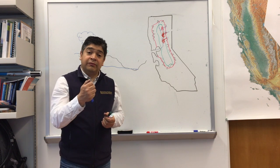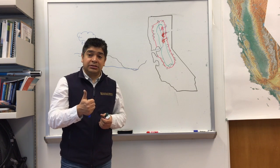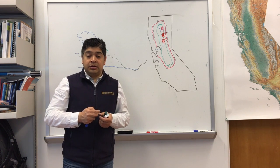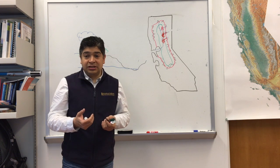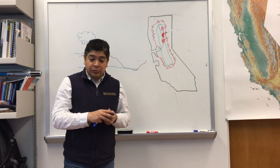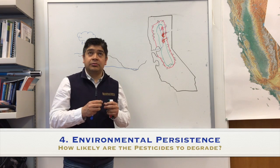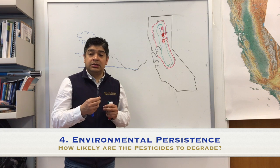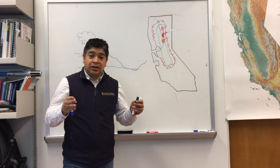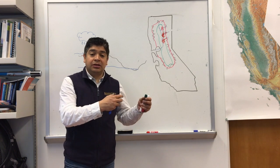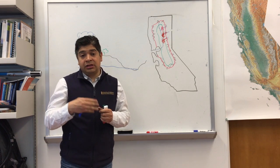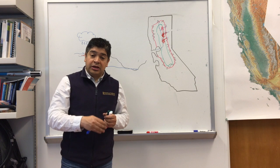We talked about the first characteristic of the pesticide: solubility. Now let's talk about the second characteristic, which is persistence — persistence in the environment. When we are talking about persistence, it is how likely the pesticide is to degrade. If it is taking a long time to degrade, it will be in the environment longer. The longer it is in the environment, the more likely it will end up either in the river or in the aquifers.